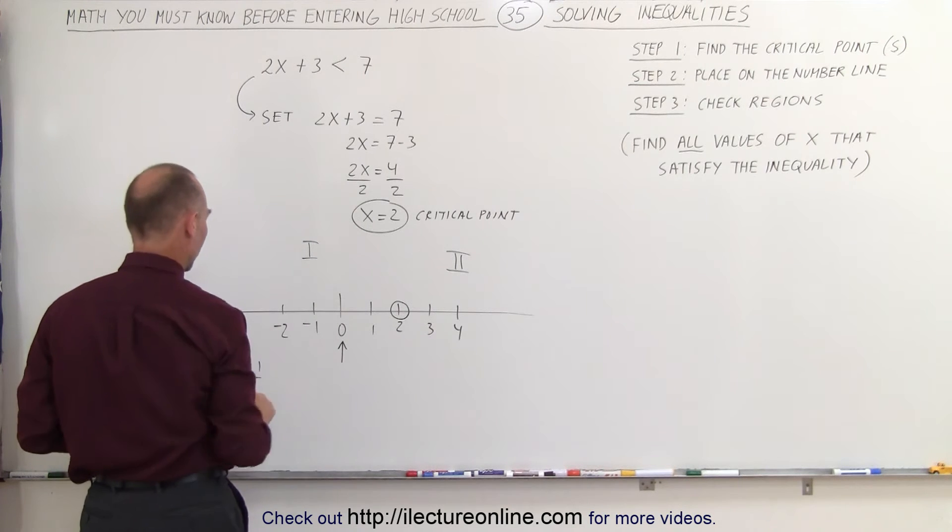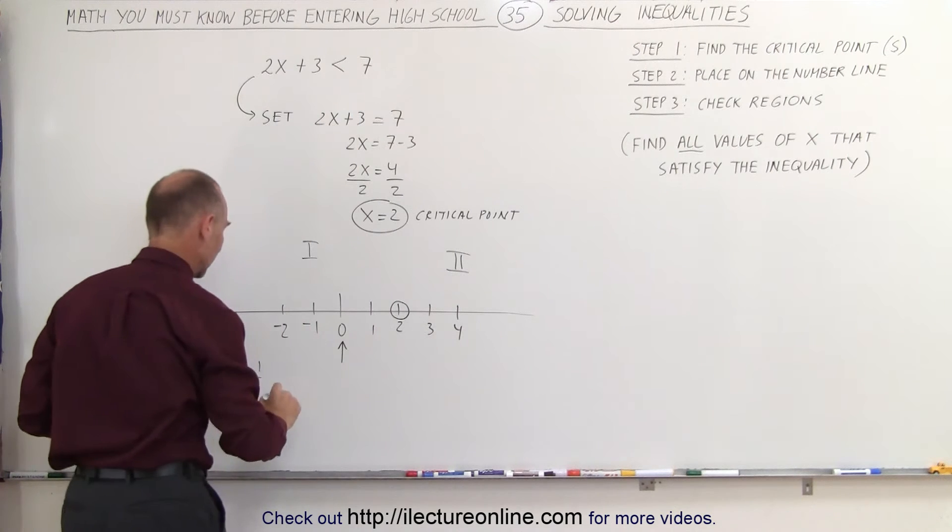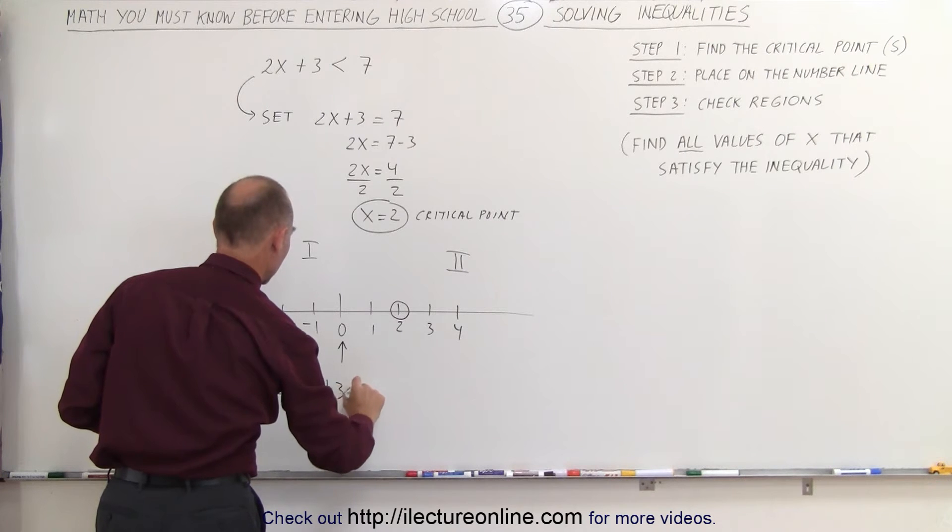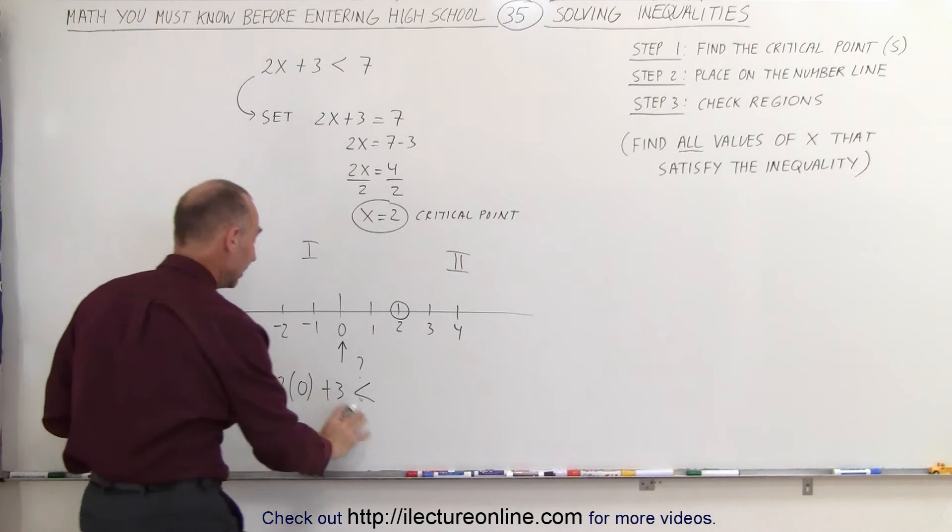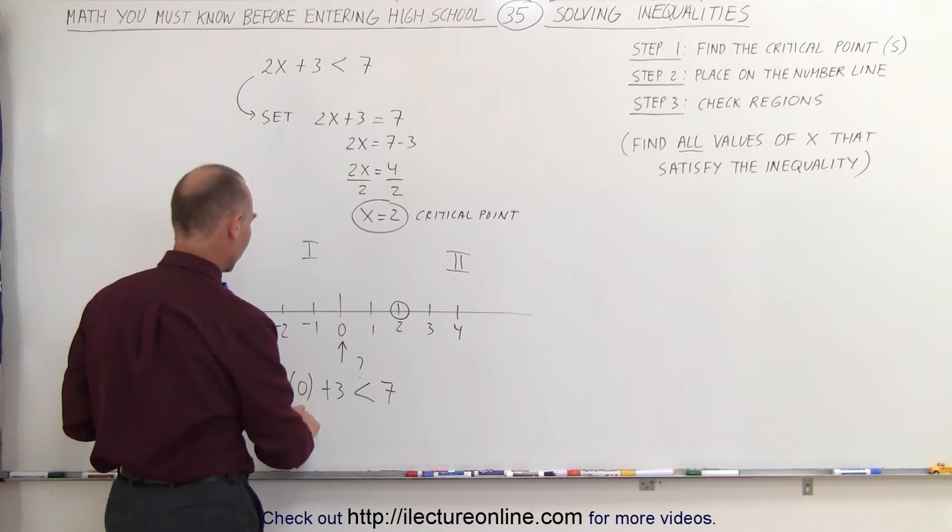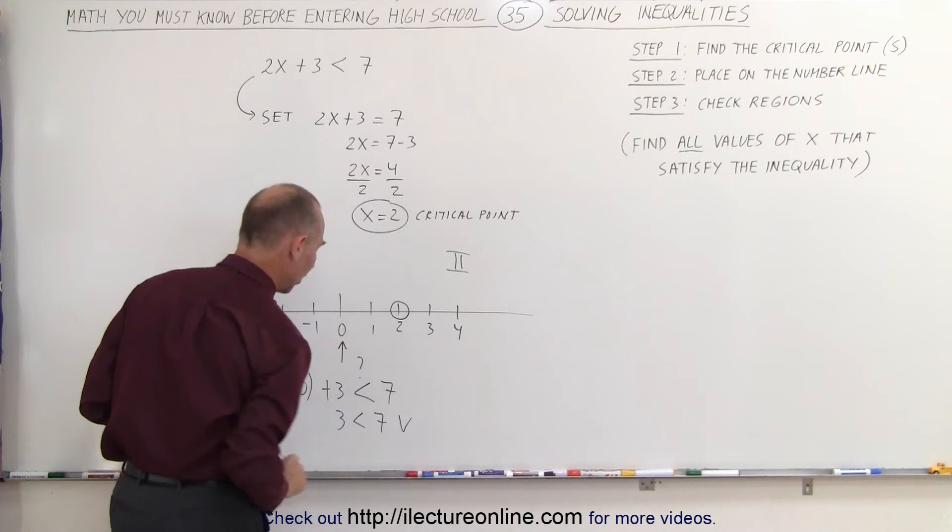For region number 1, we're going to plug 0 in for x and see if it satisfies inequality. So 2 times 0 plus 3 less than question mark because we don't know, we're trying to figure that out. Is that less than 7? Well let's see here. 2 times 0 is 0 and 3 is indeed less than 7. That checks. So this is a true statement.